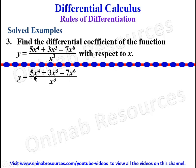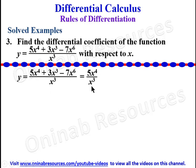To find the derivative of this function, we split it into individual fractions — each term in the numerator divided by the denominator. So we have: 5x^4 over x^3, plus 3x^3 over x^3, minus 7x^6 over x^3.